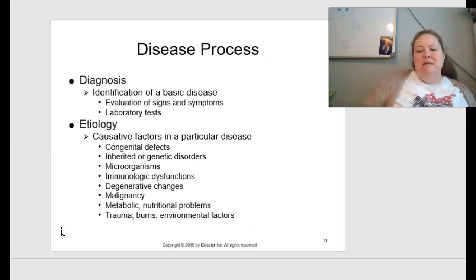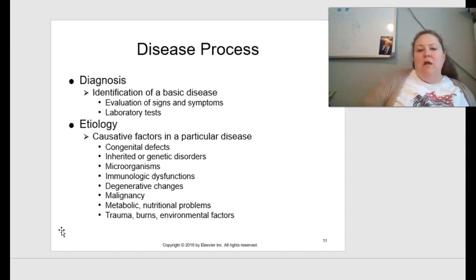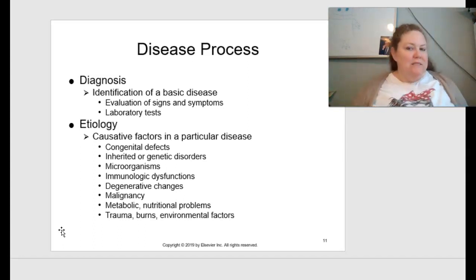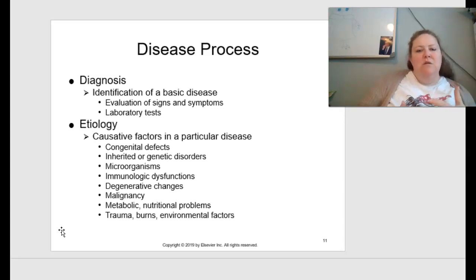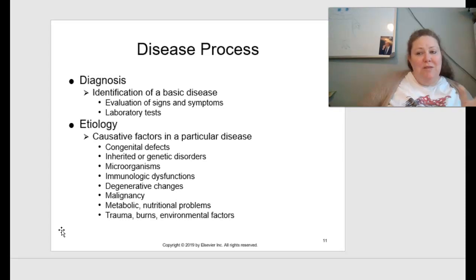With the process of disease, first we diagnose it — identifying a basic disease by evaluating signs and symptoms and performing laboratory tests to confirm or rule out. Then we look at etiology, the causative factors of that disease. These can include congenital defects, inherited or genetic disorders, microorganisms, immunologic dysfunctions, degenerative changes, malignancies, metabolic or nutritional problems, trauma, burns, and environmental factors.